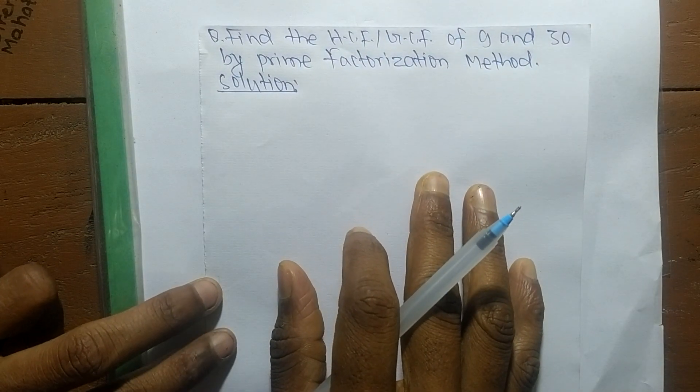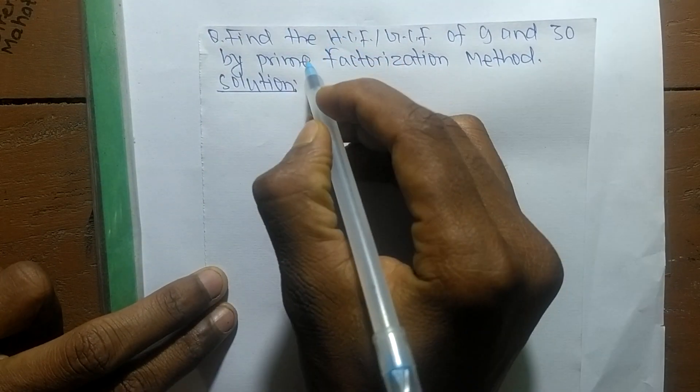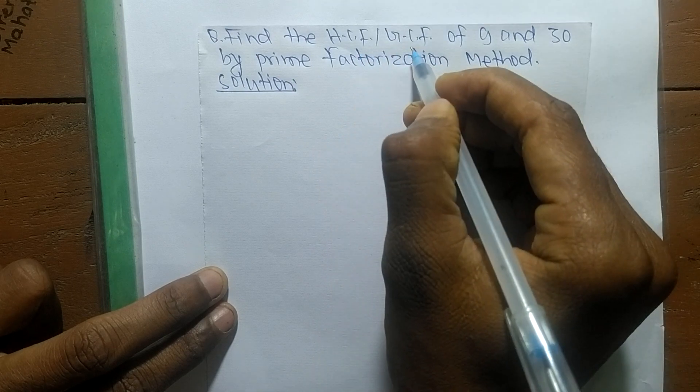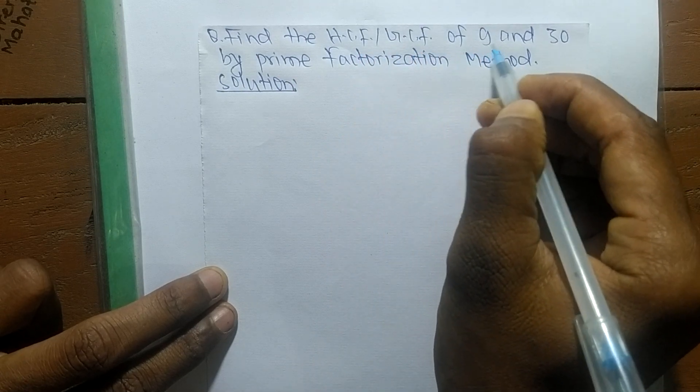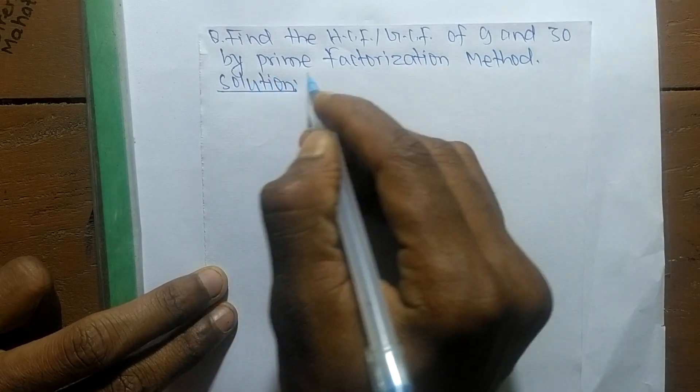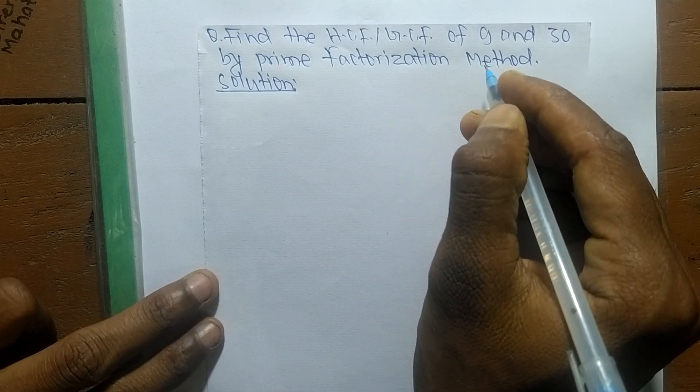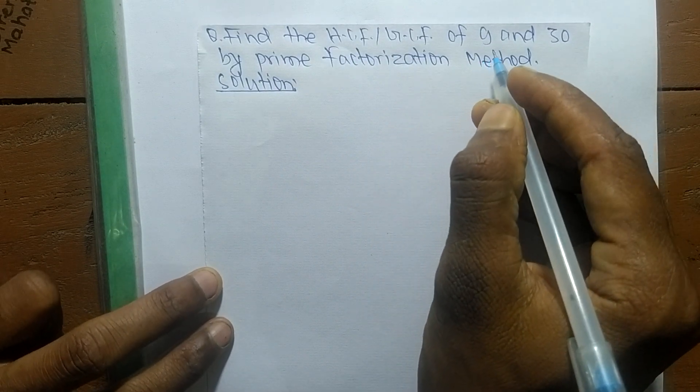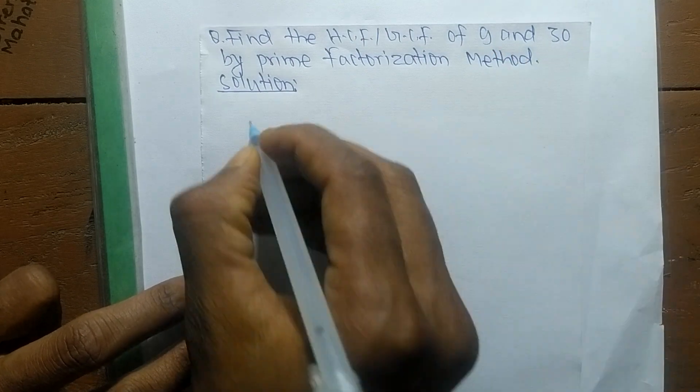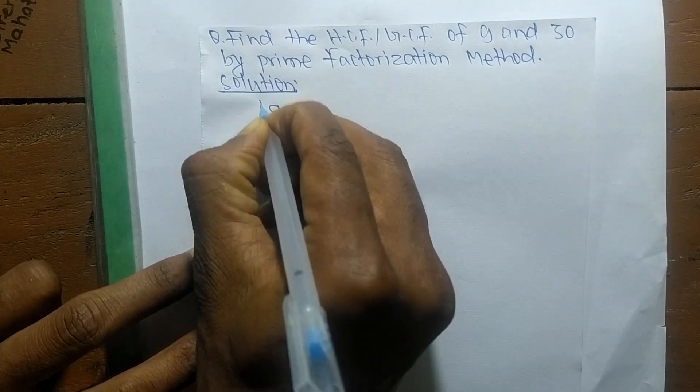So today in this video we shall learn to find the HCF or GCF of 9 and 30 by prime factorization method. First we find out the prime factors of 9 and 30.